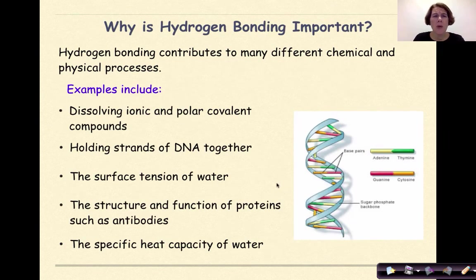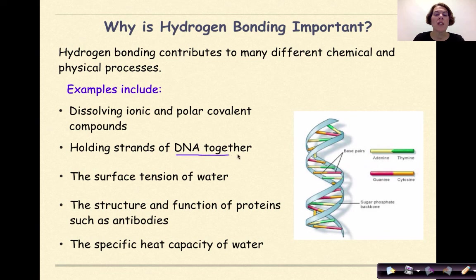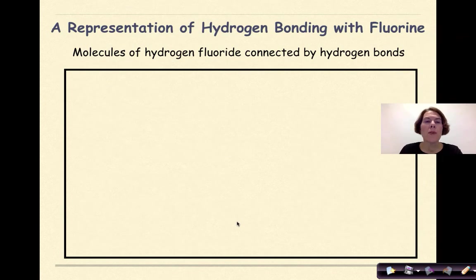Why is hydrogen bonding important? Hydrogen bonding contributes to many different chemical and physical processes. These examples include dissolving ionic and polar covalent compounds, holding strands of DNA together, the surface tension of water, the structure and function of proteins such as antibodies, and the specific heat capacity of water.